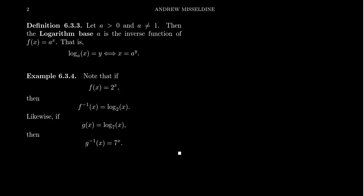Let a be a positive number other than the number one itself. Then we define the logarithm base a, denoted log — we often call them logs for short — log sub a of x. The log base a of x is the inverse function to the exponential function f of x equals a. These two functions are inverses of each other. Before we talk more about logarithms, let me talk about other inverse relationships we're familiar with.